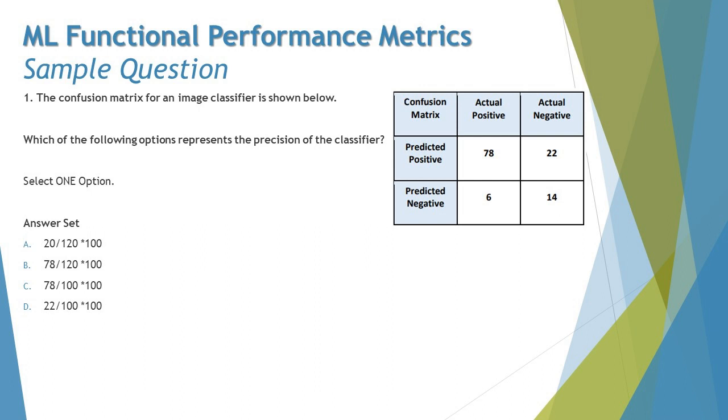The formula for precision stands for TP (true positive) divided by true positive plus false positive, and the overall thing multiplied by 100. So when we talk about true positive here, which is 78, and true positive plus false positive is 78 plus 22, so 78 divided by 78 plus 22, which of course comes back to you as the option C.